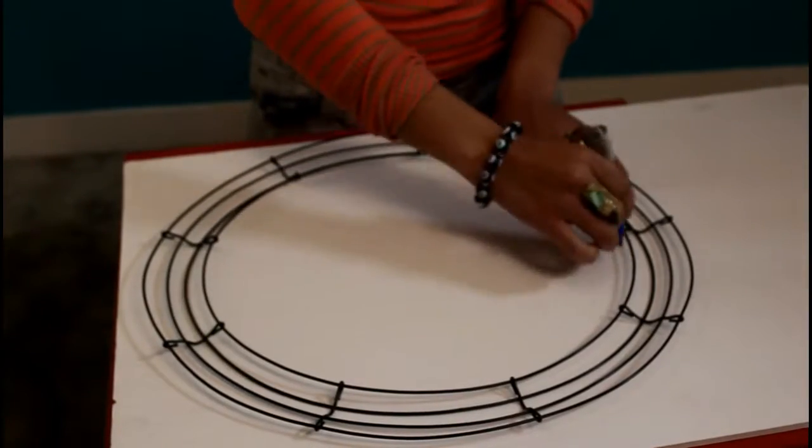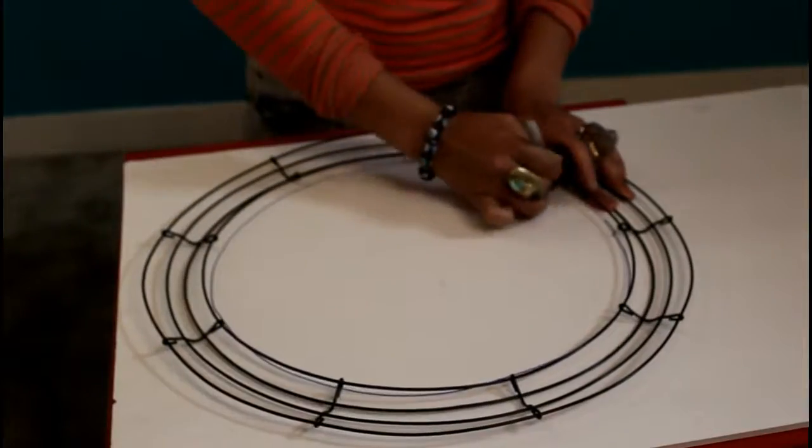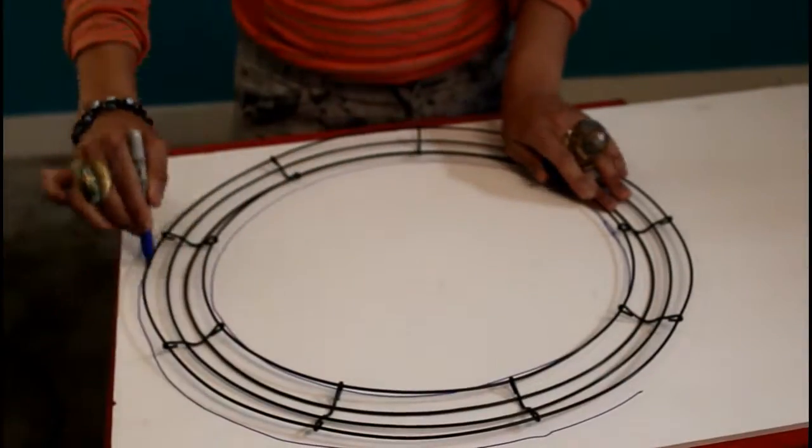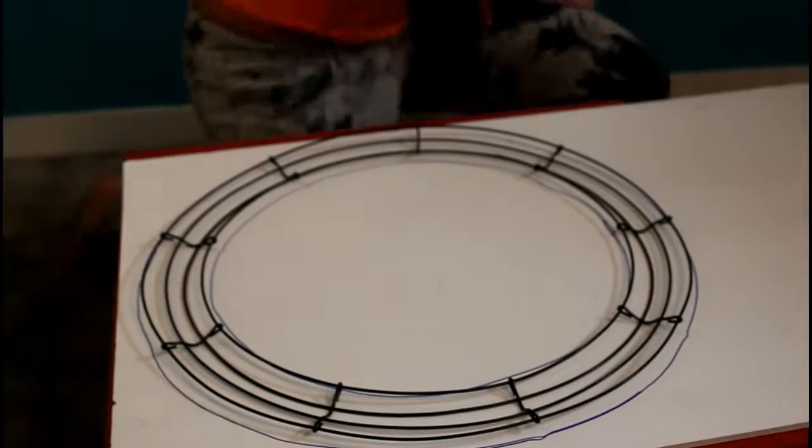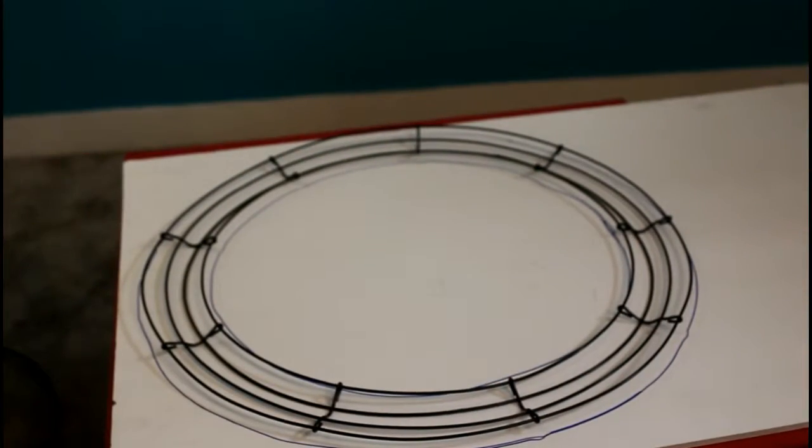So, you're going to lay down the wire frame wreath on your white board and trace the outside and the inside, so you're just going to make a cover to go on the back of it. It's going to look like a little donut.